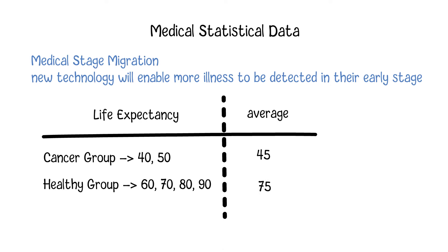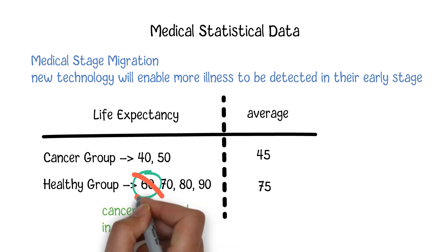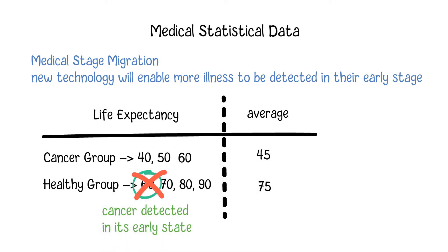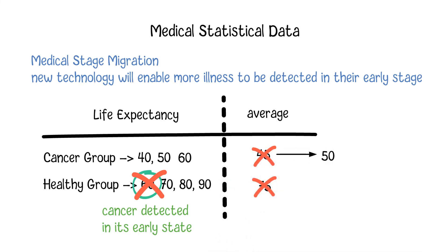Now we have an advanced cancer detection technology which can detect cancer in its early stage. In the group of healthy people, the technology can help identify that the person whose estimated life expectancy is 60 is in the early stage of cancer. So this person will be moved from the healthy group to the patient group. If we recalculate the average life expectancy of those two groups, we will find that the numbers are increased in both groups to 50 years old and 80 years old respectively.